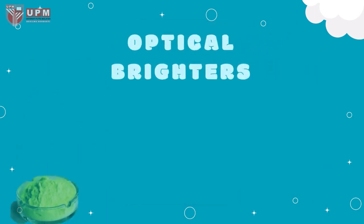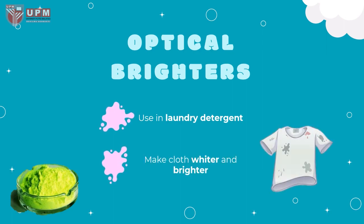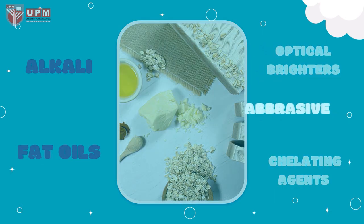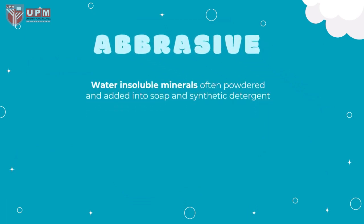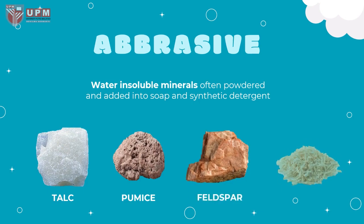Optical brighters are usually used in laundry detergent — they will make cloth whiter and brighter. Next, abrasive is water-insoluble minerals that are often powdered and added into soap and synthetic detergent. Examples of abrasives are talc, pumice, feldspar, and sawdust.